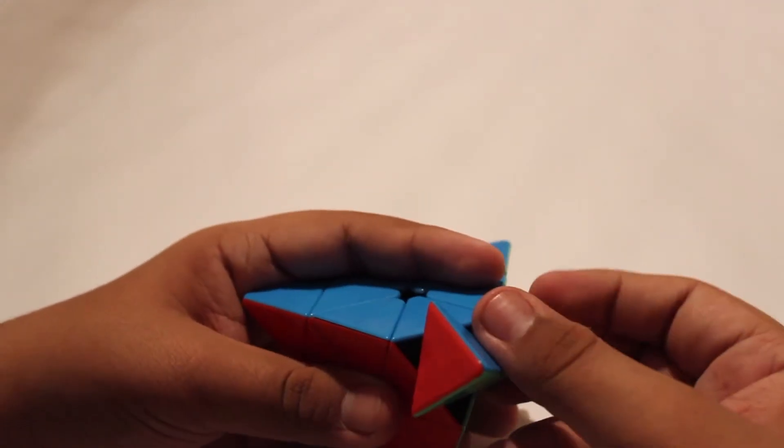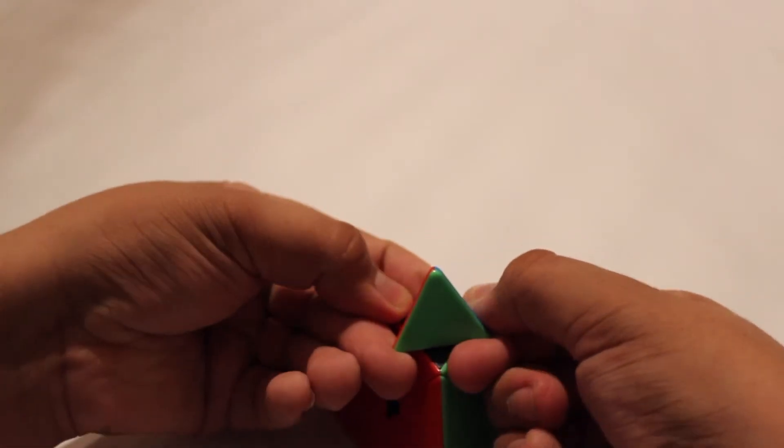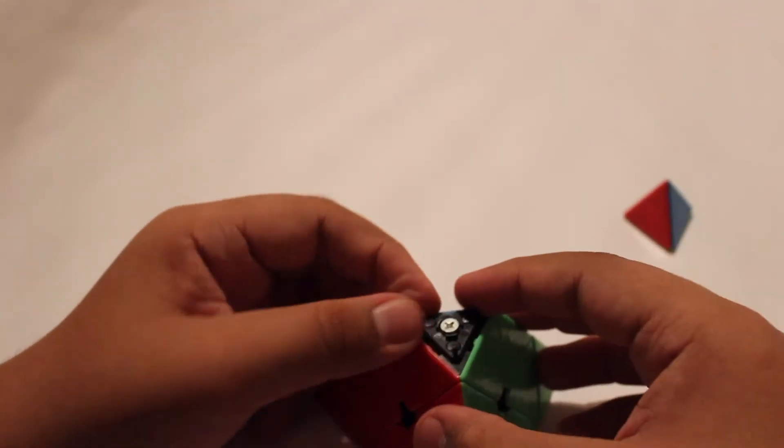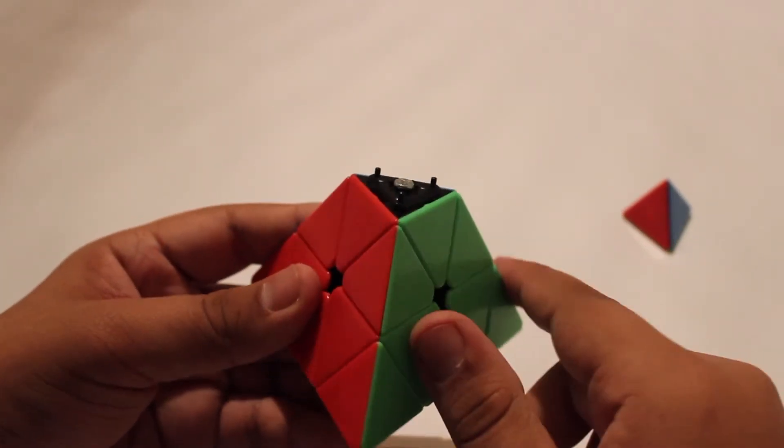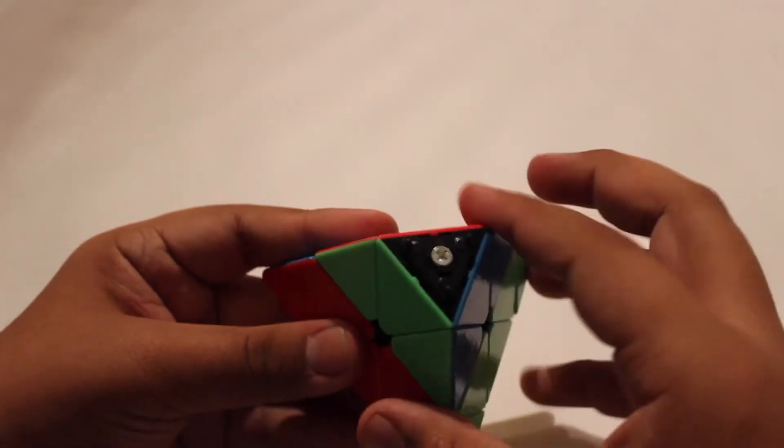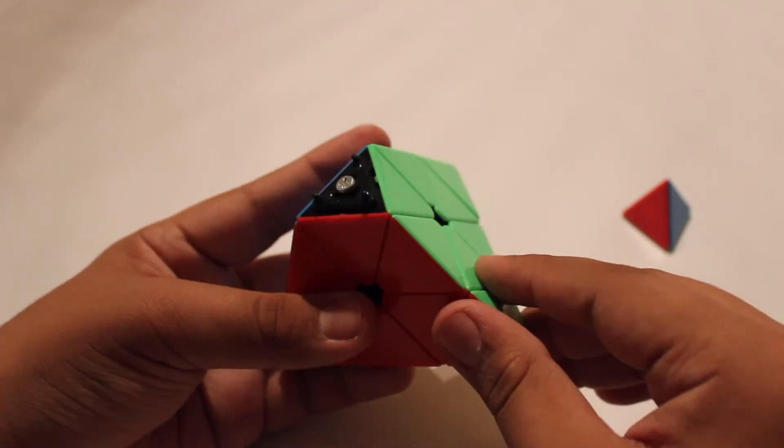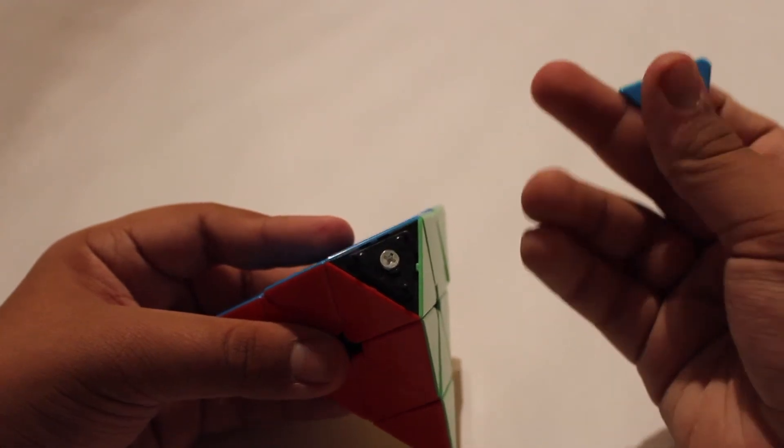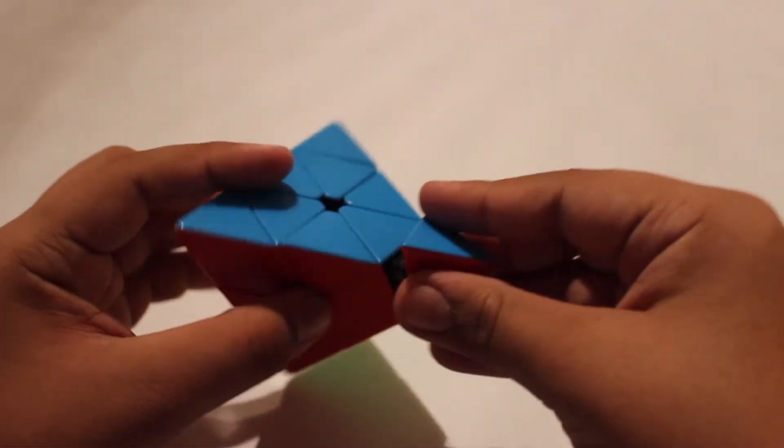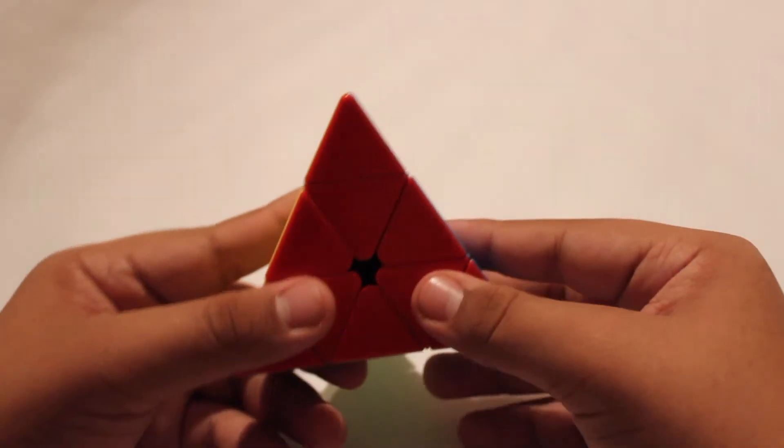The Shang Shao Pyraminx is tensionable. As you can see, all you have to do is pop a tip off, if I can do it. There you go. And you can tension it with a Phillips head screwdriver. I have not tensioned this puzzle yet, because it's on tight tension for me. So it's difficult to tension. It might be different for you. But as you can also see, the caps are well on there. When I first uncapped this tip, it was very difficult. It felt like I was going to break it. So watch out. Make sure you don't break it.